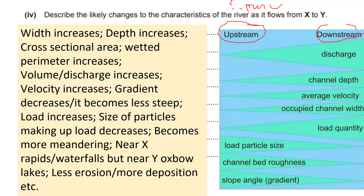Your answers can include: width increases, depth increases, cross-sectional area changes, wetted perimeter increases, volume/discharge increases, velocity increases, gradient decreases (less steep), load number increases, and particle size decreases. At X (upper course) you have features like waterfalls, but at Y you begin to have oxbow lakes, less erosion, and more deposition.